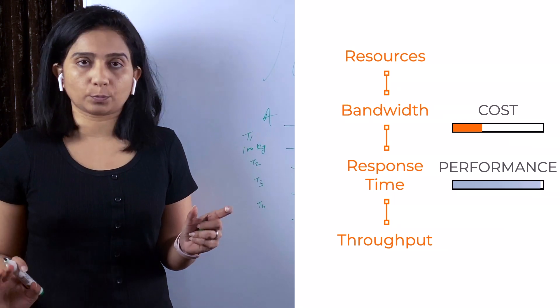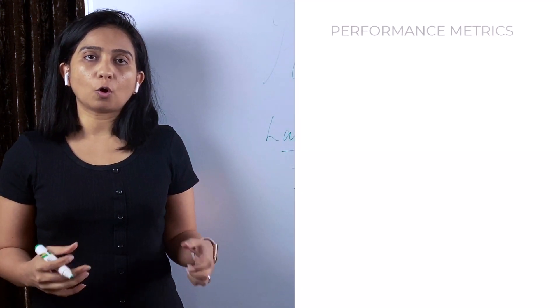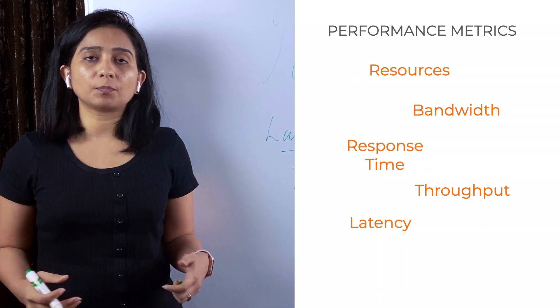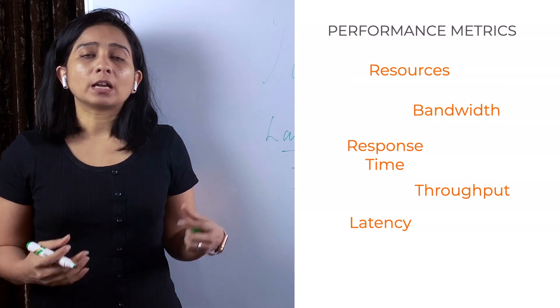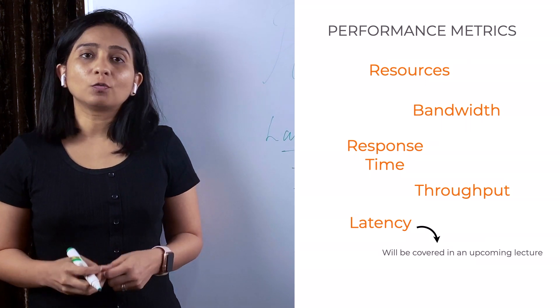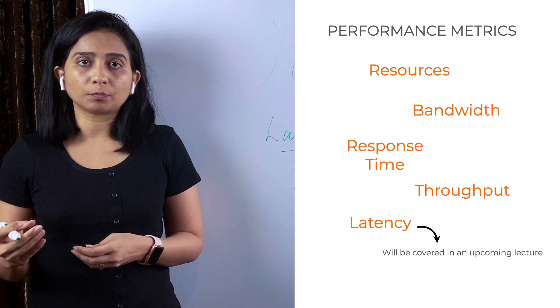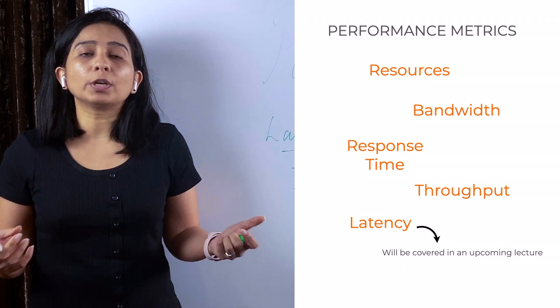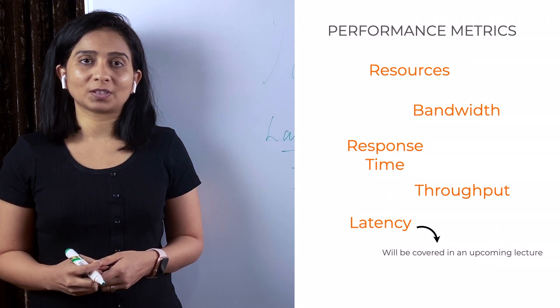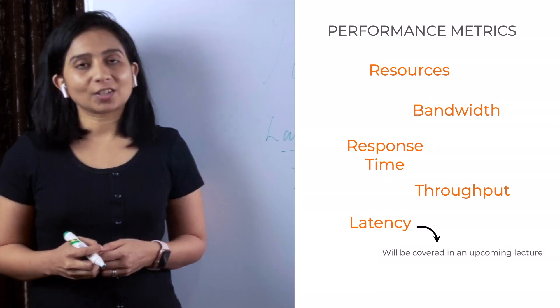That was a brief overview of different metrics like throughput, bandwidth, latency, and response time — the basic concepts and how you can understand and optimize your systems accordingly. In the next video, we will talk about how to use these metrics with different system components to measure performance and what to do to increase it. If you have any doubts or questions, please feel free to add them in the comments. Take care, see you in the next video.